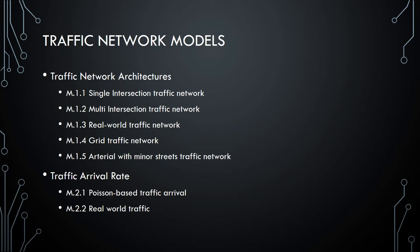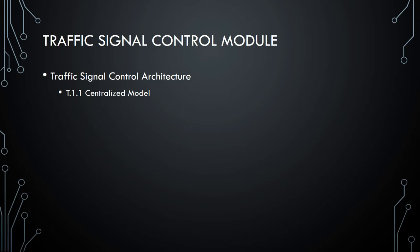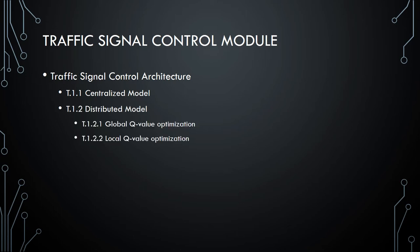Next we have traffic arrival rate, modeled in two ways: Poisson-based traffic arrival and real-world traffic. A traffic signal control module can either be a centralized model or a distributed model. The distributed model goes on with either a global Q-value optimization or a local Q-value optimization.